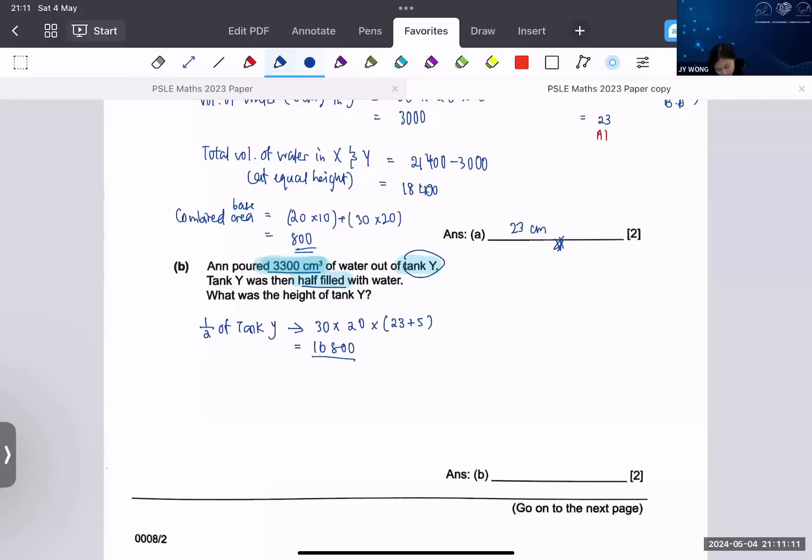Which is the height, that should give you 16,800. So what do we do after this? I see most of you type in the answer 45. 45 is correct. This is the half of the tank, you are trying to find the height of the tank Y, so you need to find the full tank.